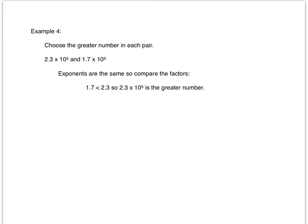In example four, we'll choose the greater number in each pair. The numbers are 2.3 times 10 to the fifth power and 1.7 times 10 to the fifth power. The exponents are the same, so we will compare the factors. 1.7 is less than 2.3, so 2.3 times 10 to the fifth is the greatest number.